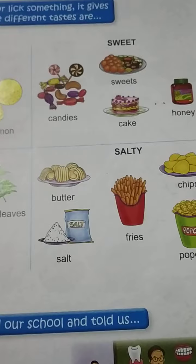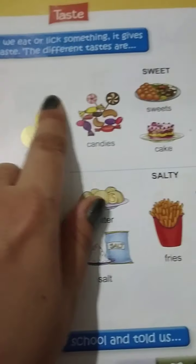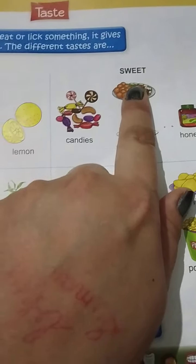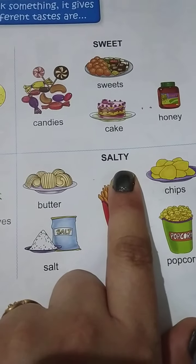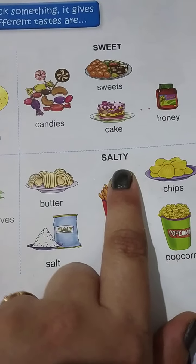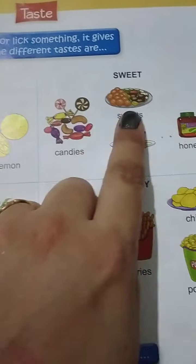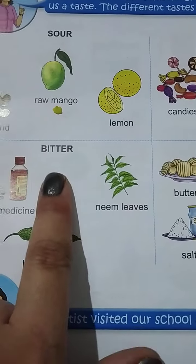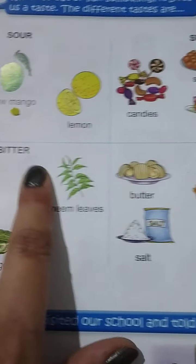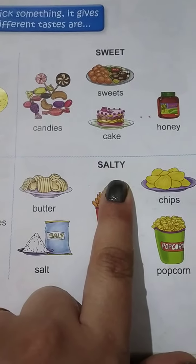Toh humne kya padha? Different types of taste — kya kya hai? Sour, sweet, bitter, salty. Sour means khatta. Sweet means meetha. Bitter means kadva. Salty means namkin.